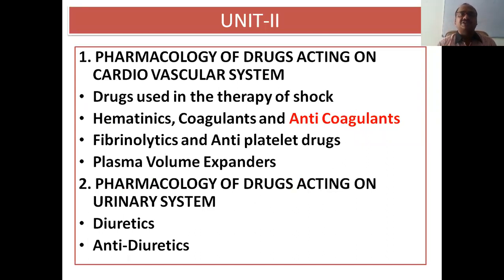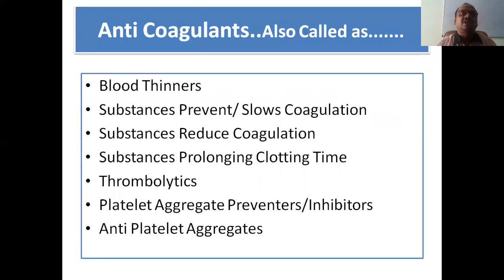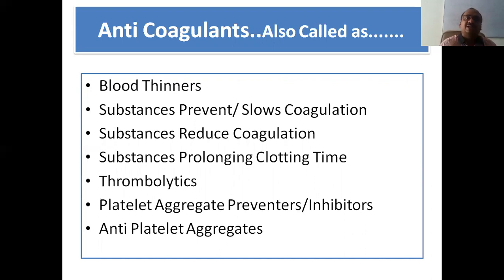This is as per the syllabus of your university — Pharmacology 2. The highlighted topic is anti-coagulants. Our learning outcomes today include anti-coagulants, hematinics, and coagulants, which I have already completed in my last video. Anti-coagulants are also called synonymously as blood thinners — the blood becomes less viscous, more watery. They are substances that prevent, slow, or reduce coagulation, thereby prolonging the clotting time.